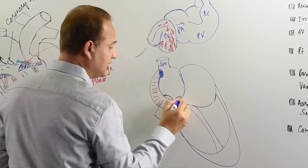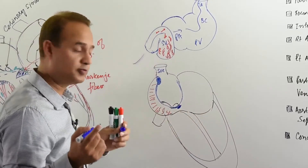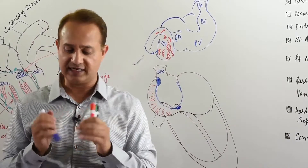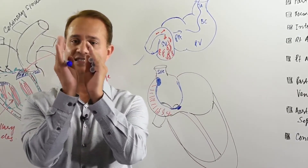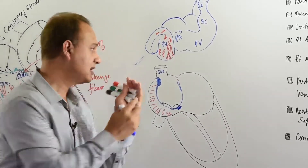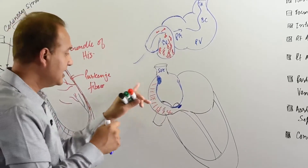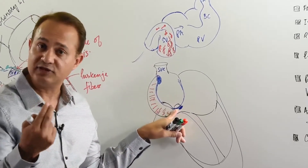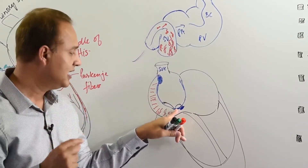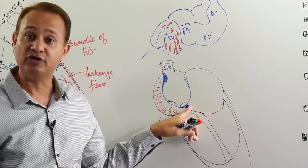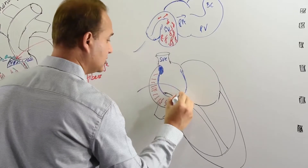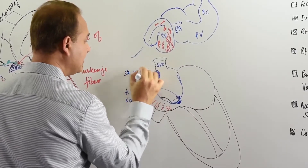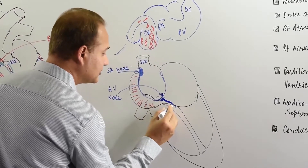The AV node develops near the coronary sinus. When the sinus venosus is incorporated, the right side forms the crista terminalis; the left side becomes incorporated and disappears. On the lower side it makes the valve of the inferior vena cava, and then there is the coronary sinus — the opening of the left horn of the sinus venosus which became atrophied. Right in front of that coronary sinus is the AV node, which is also part of the sinus venosus contribution.